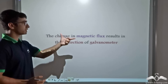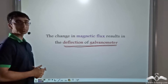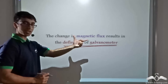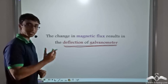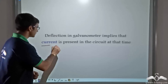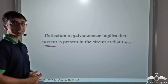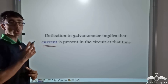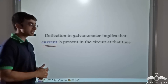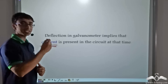The change in magnetic flux is what results in the deflection of the galvanometer. When magnetic flux remained constant, there was no deflection. However, whenever there was a change in magnetic flux, a deflection was present. This deflection implies that a current is present in the circuit — because a galvanometer is an instrument which measures current and also indicates the direction in which current flows. So when there is a deflection, we can say not only that current is present, but also in which direction it is flowing.